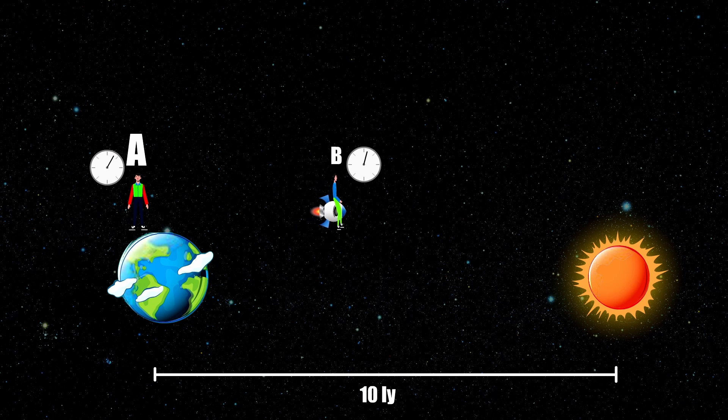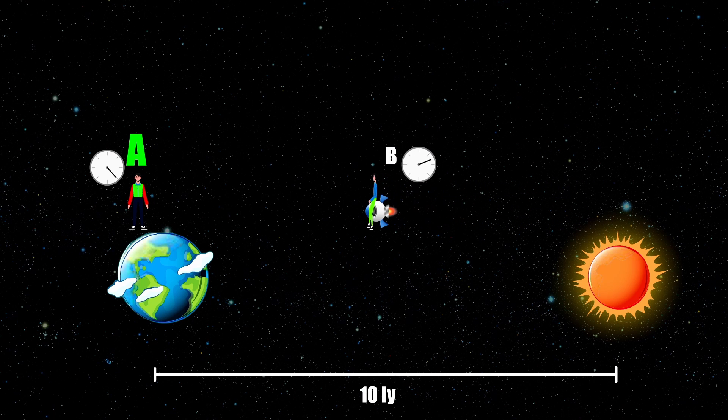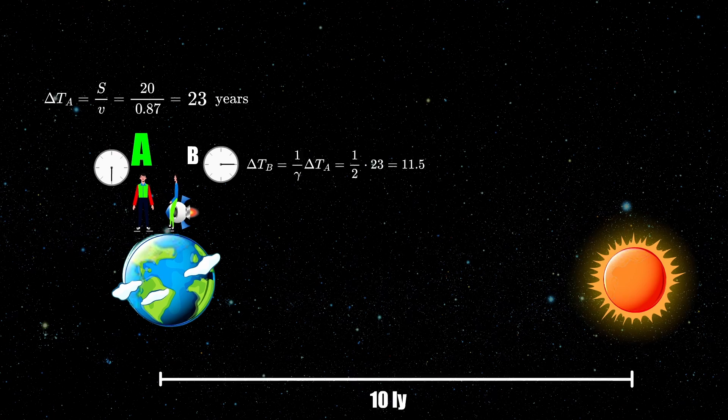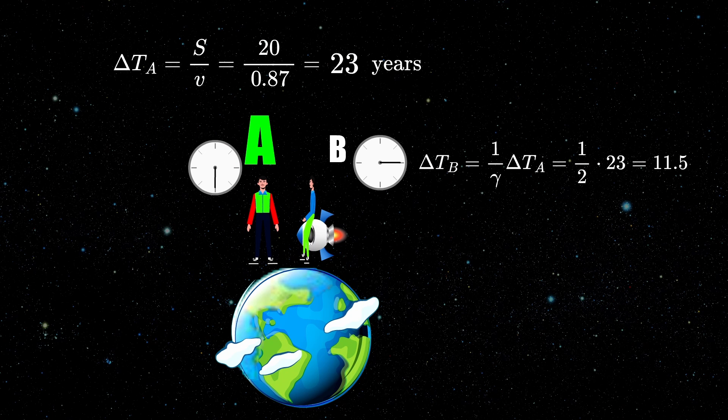But this is not what the twin paradox is all about. If we live in a reasonable world, it shouldn't matter which clock you are looking at — you should always get the same result; otherwise there is something odd about your theory. Looking at the problem from observer A's frame, the total time for A is 23 years, and due to time dilation the clock of observer B is slower by 2, so at arrival observer B will only have 11.5 years. So far so good.